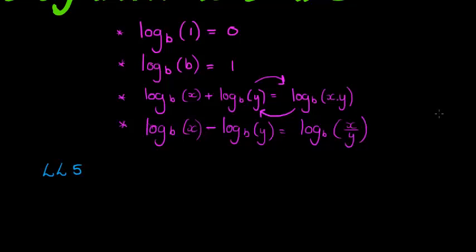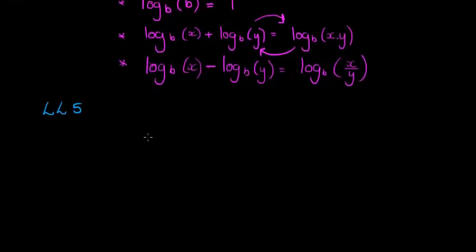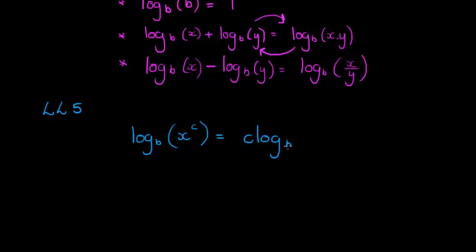Logarithmic law five — I like this one, it's a fun one for me. This law says that if I have a logarithm with a base and inside I have a power, let's call it x to the power of c, then the exponent of the interior can become the coefficient of the logarithm. A lot of times teachers say this c multiplies to the front, but that's not really what happens.